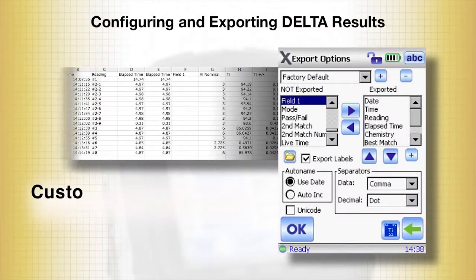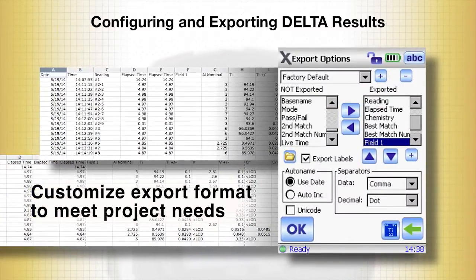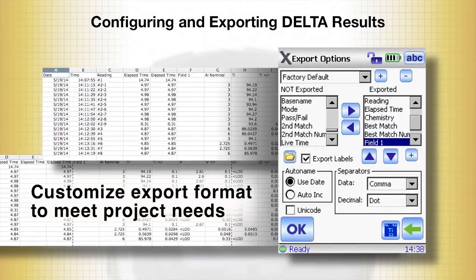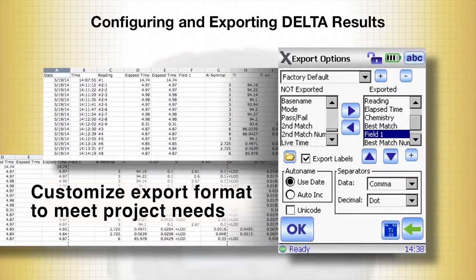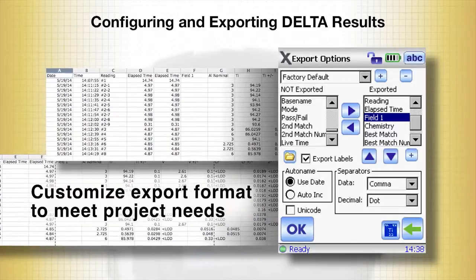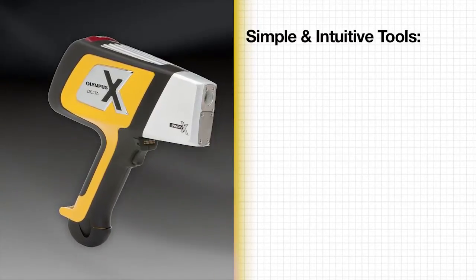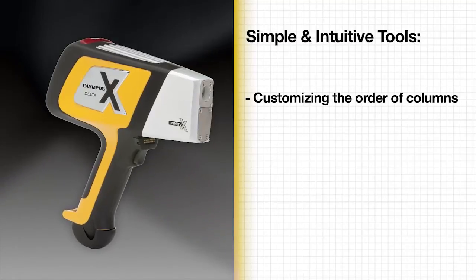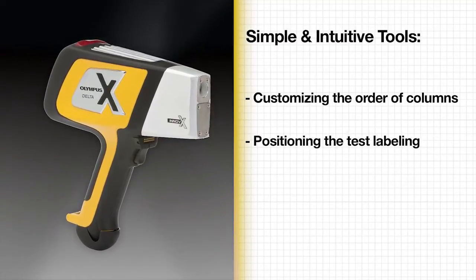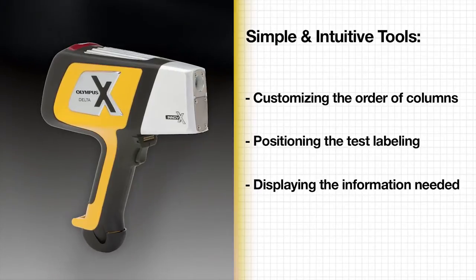The ability to customize the Delta's export format to meet the needs of your project, application, or company's preferred data format is a powerful time-saving feature. The Delta has simple intuitive tools for customizing the order of columns, positioning the test labeling, and displaying the information needed.